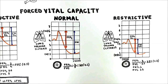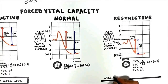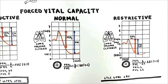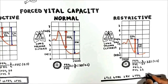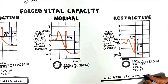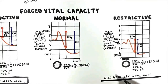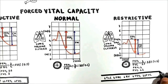To sum up, in restrictive lung disease: lung compliance decreases; total lung capacity, FRC, and residual volume all decrease. Both FEV1 and FVC are reduced, but FVC is reduced more than FEV1. The FEV1/FVC ratio is normal or increased — 88% in this case.